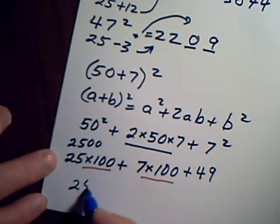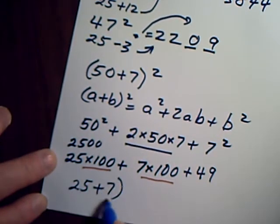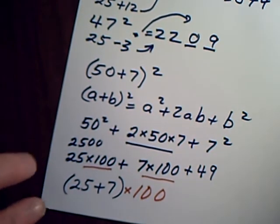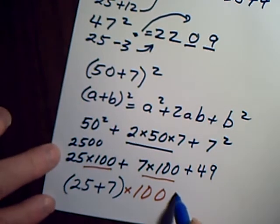So I'm left with (25 + 7) × 100, and then 49 added.